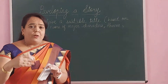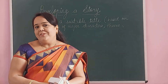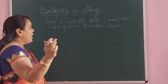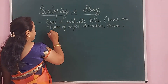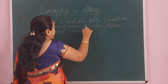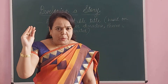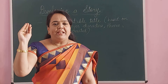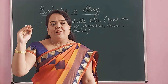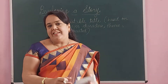So the title can be based on the characters. The third way is that it can be based on the theme of the story, or it can be based on the incident narrated in the story — for example, 'A Race Between Hare and Tortoise.' So always start by giving a title, and you should decide the title based on three things: the name of the characters, the theme, or the incident narrated in the story.